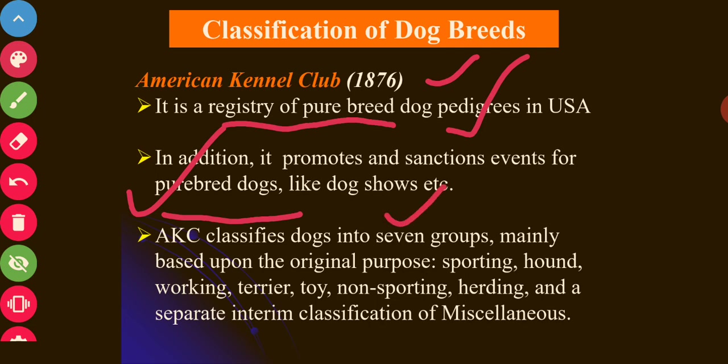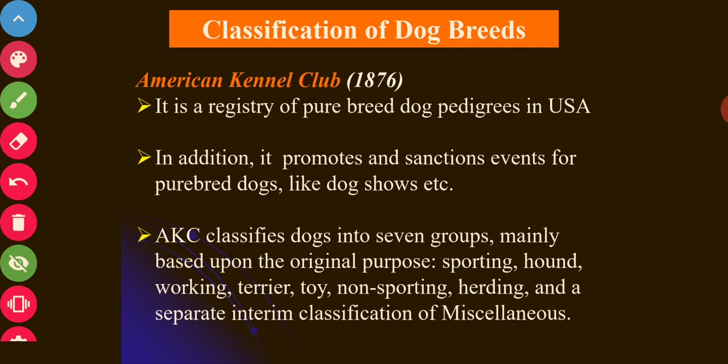The AKC classifies dogs into seven groups: Sporting, Hound, Working, Terrier, Toy, Non-Sporting, and Herding. In addition, they have also classified one separate group called Miscellaneous. If an animal does not fit into the seven main groups, it will be placed in the Miscellaneous group, or kept there before entering one of the seven groups.